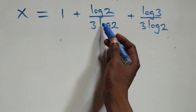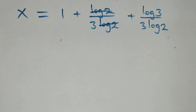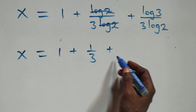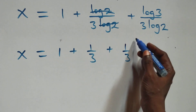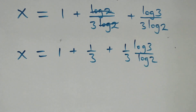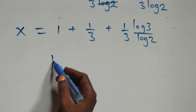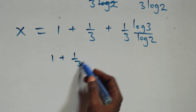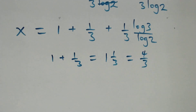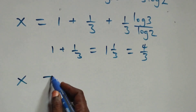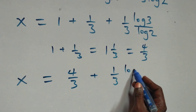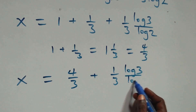Next step here, log 2 cancels each other, leaving 1 over 3. And we have x equals to 1 plus 1 over 3 plus 1 over 3 times log 3 over log 2. Now 1 plus 1 over 3 is the same thing as 4 over 3. Then what we have becomes x equals to 4 over 3 plus 1 over 3 times log 3 over log 2.